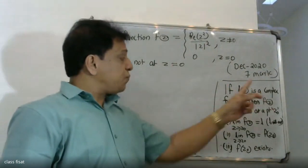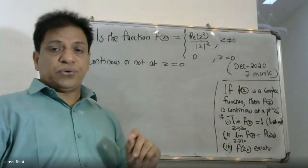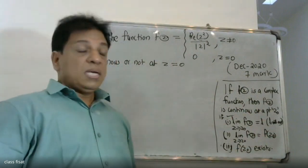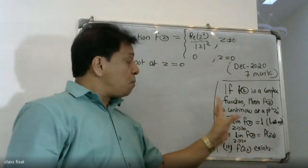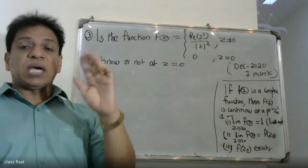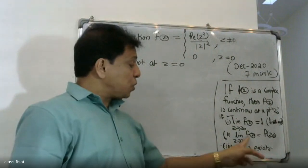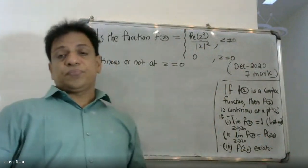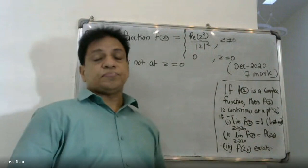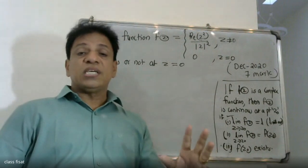If f of z is a complex function, then f of z is continuous at a point z-naught if the following conditions are met: first, the limit as z tends to z-naught of f of z exists and equals a unique value L; second, f of z-naught equals L; third, f of z-naught exists. If these conditions are fulfilled, we can say that the given complex function is continuous.